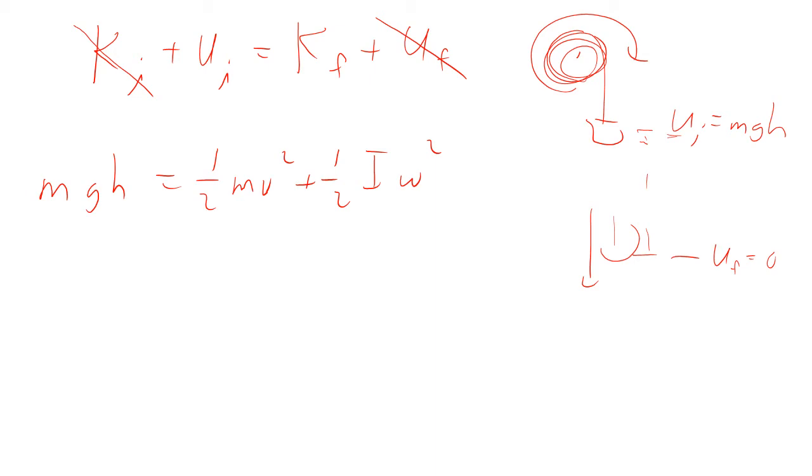So we look at that and we say, so I is I of a disk. How do you know the I of a disk? Well, you look it up. So it's one half M R squared.